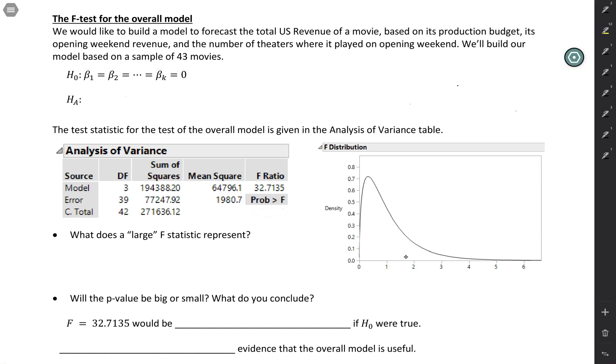And we're building this model based on a sample of 43 movies. So the null hypothesis is written in terms of the slopes, and we have multiple slopes because we have multiple explanatory variables here. And the null will always just be that beta 1 through beta k, however many you have, are all equal to zero.